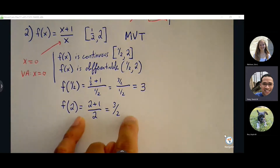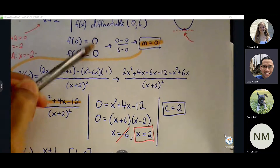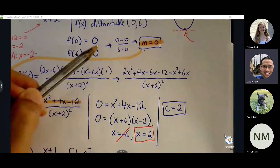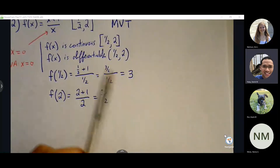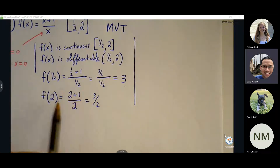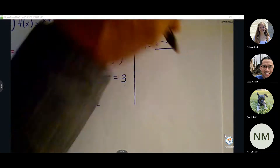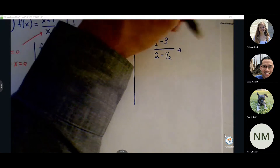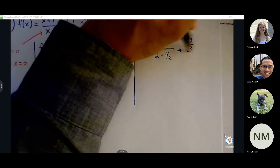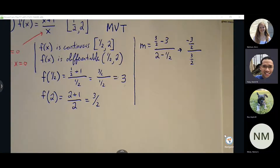We have our ordered pairs: one-half, 3 and two, three-halves. The main difference between mean value theorem and Rolle's theorem is that with Rolle's theorem, the ordered pairs need to share the same y value to create slope zero. But mean value theorem can be any y value — the slope doesn't have to be zero, it can be any slope as long as it's valid. So now we take the time to find the slope: change in y over change in x. Three-halves minus three is negative three-halves; two minus one-half is three-halves. Negative three-halves over three-halves is negative one.